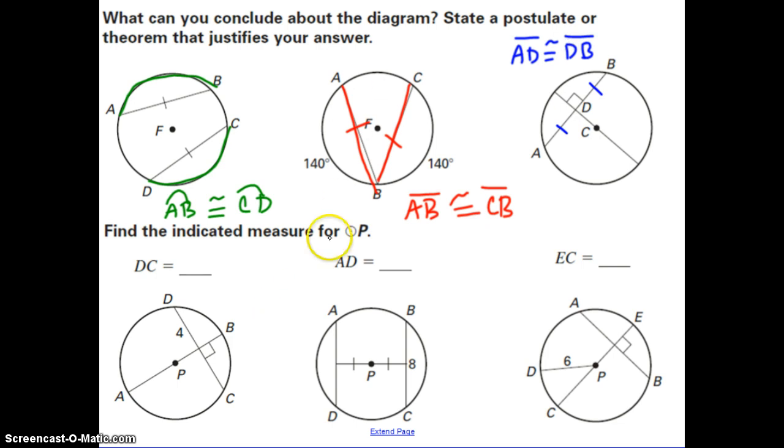In this bottom set, we want to find the indicated measure for circle P. So in here, we're looking for the length of DC. That's this entire length for that chord. Now we're using that theorem again, where we have a diameter, and it's perpendicular to a chord. So that means it bisects the chord. So if this half is 4, this half is also 4, which gives us an entire length of DC to be 8.